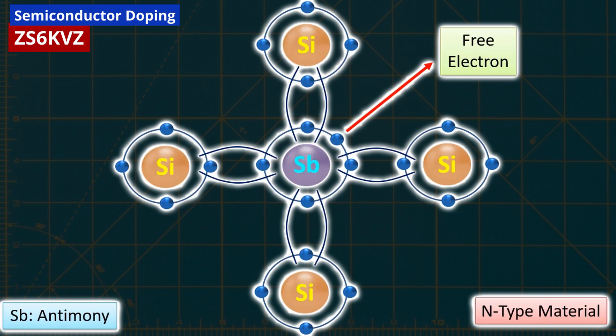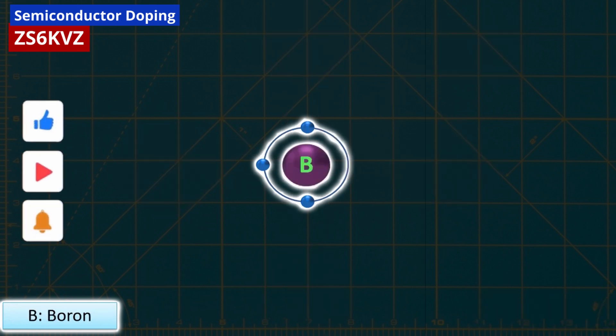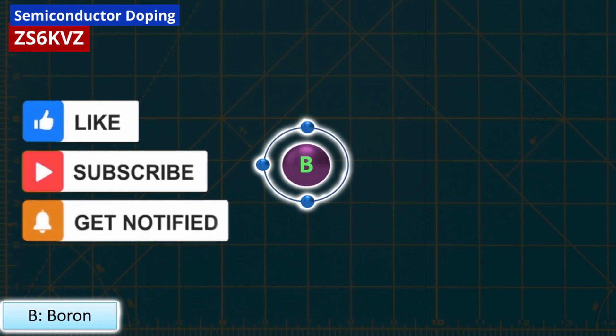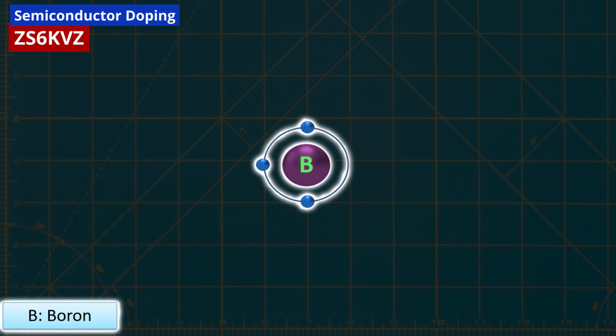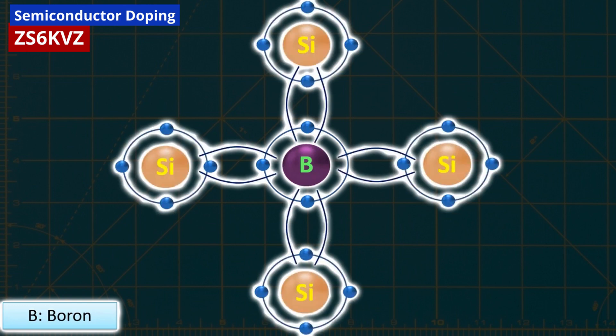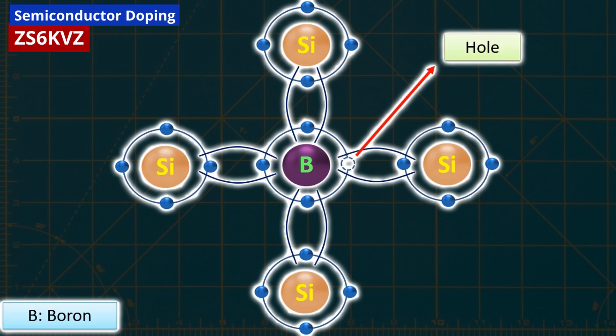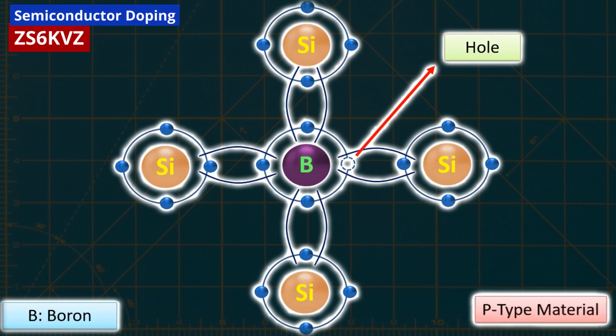Similarly, let's consider the element boron (B), which has 3 electrons in its outermost orbital. Boron is a conductor because it has 3 electrons in its outermost orbital. When we dope a boron atom with silicon, 3 electrons in boron's outermost orbital form bonds with 3 silicon atoms. As a result, 1 silicon atom remains uninvolved to maintain the bond, creating what is known as p-type material.